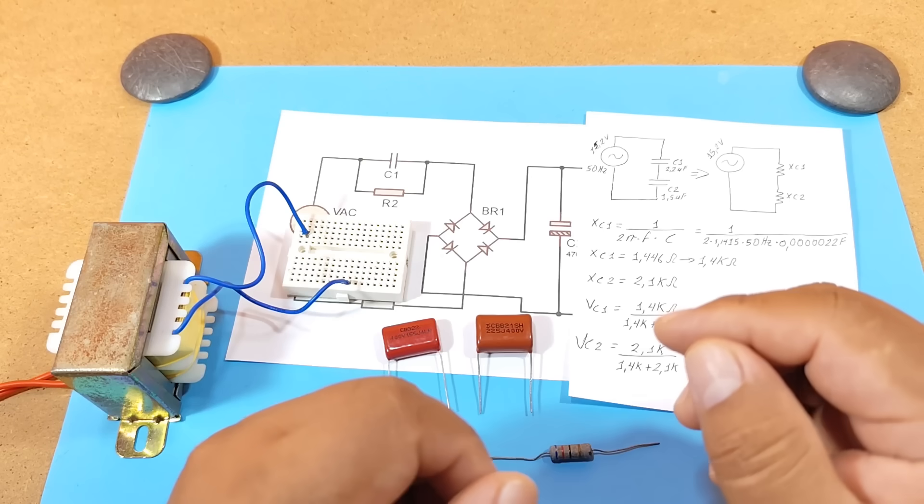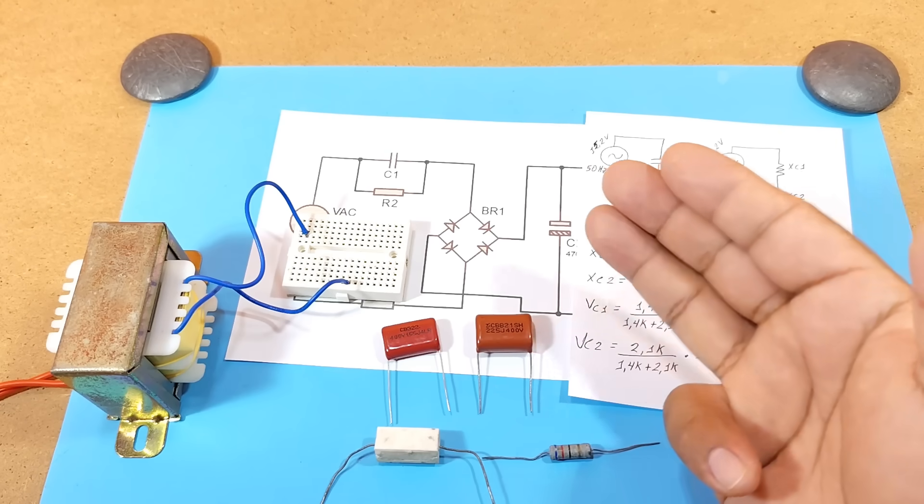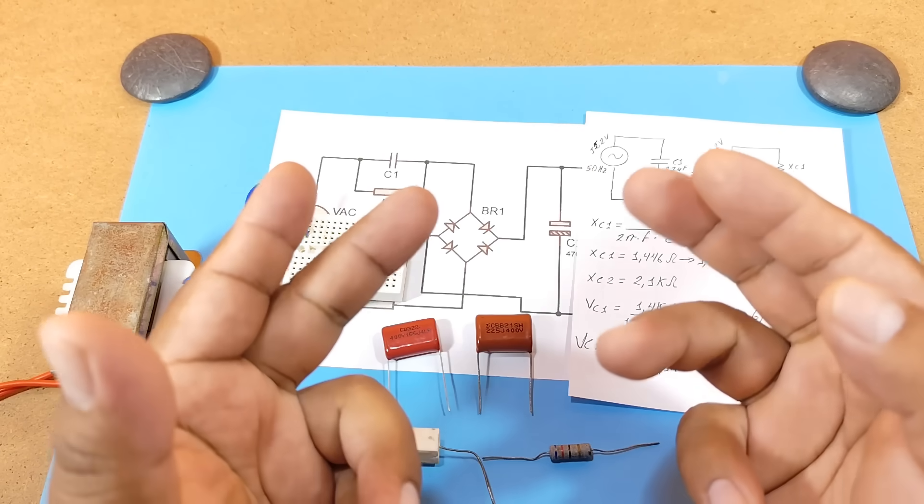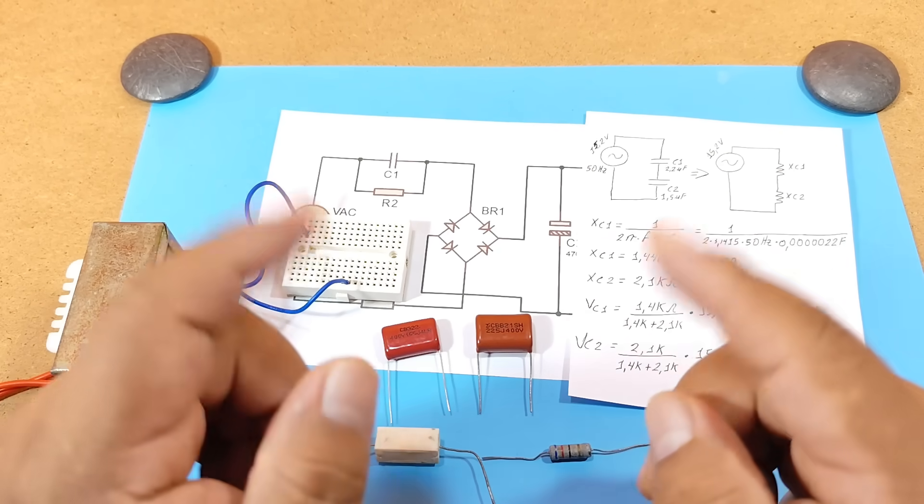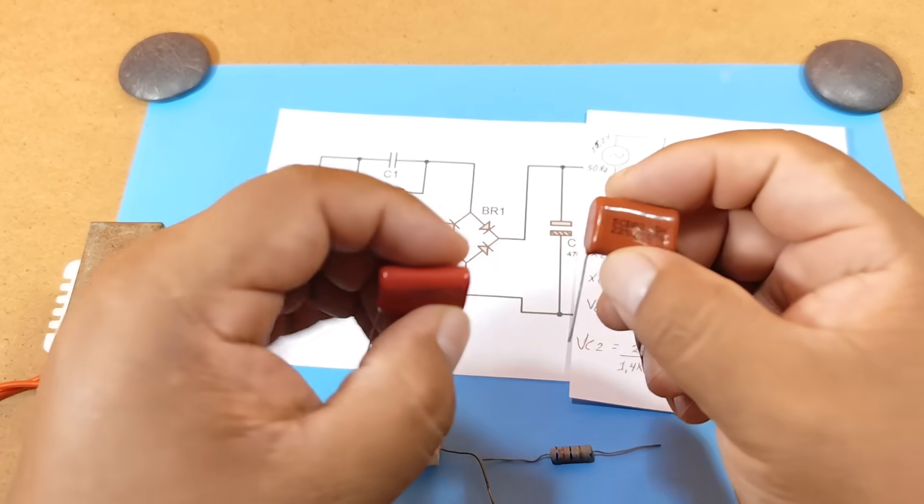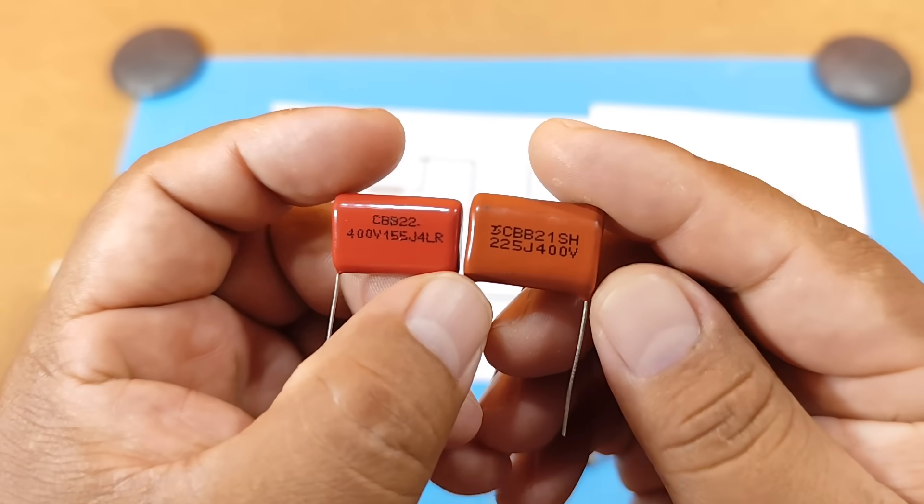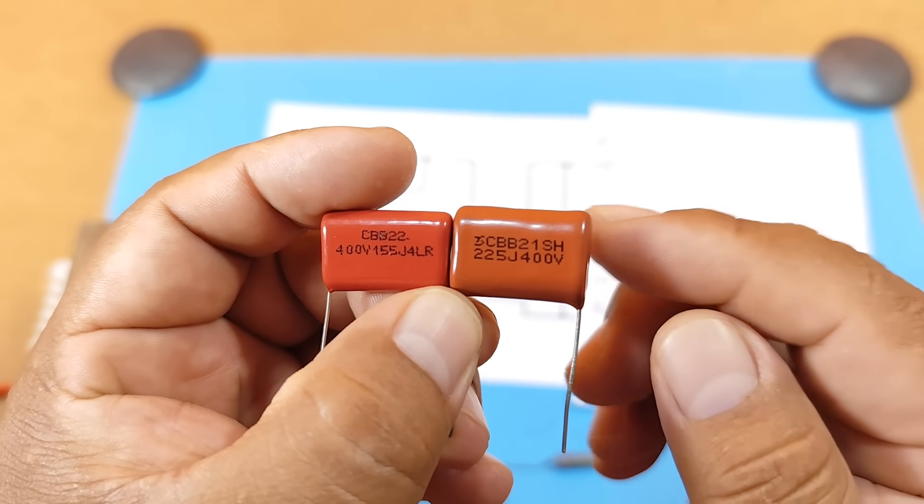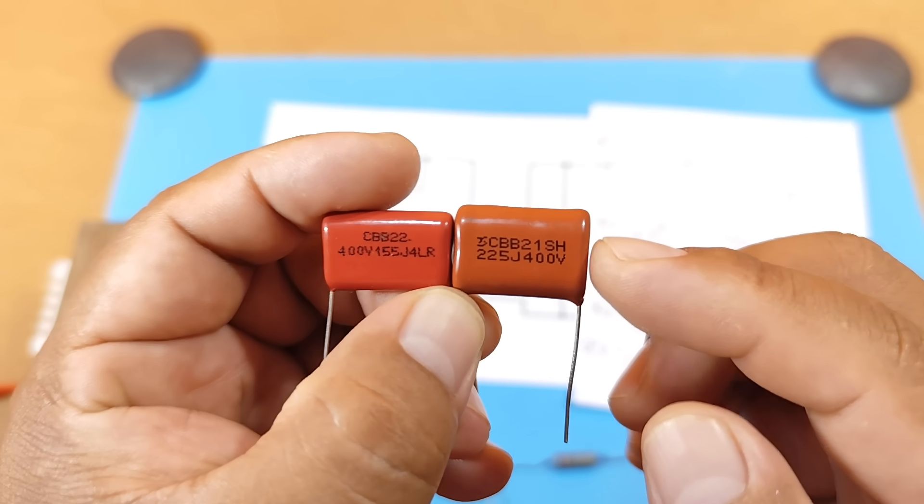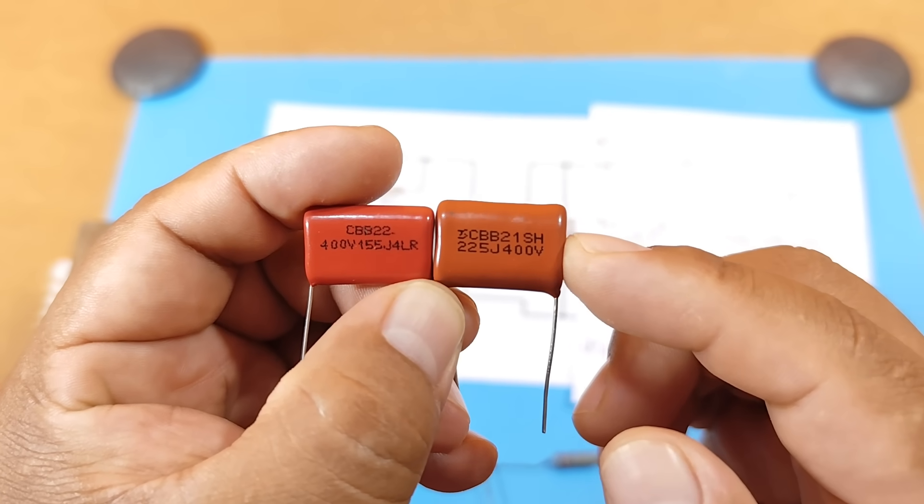Okay, before we move on to calculating our capacitive source, let's talk about a very important characteristic of capacitors. I am talking about capacitive reactance, that is, the resistance that capacitors offer when alternating current is applied to them.